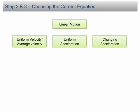For motion at uniform velocity or you are asked to find the average velocity, we use the formula v equals s over t for velocity and v equals d over t for speed.